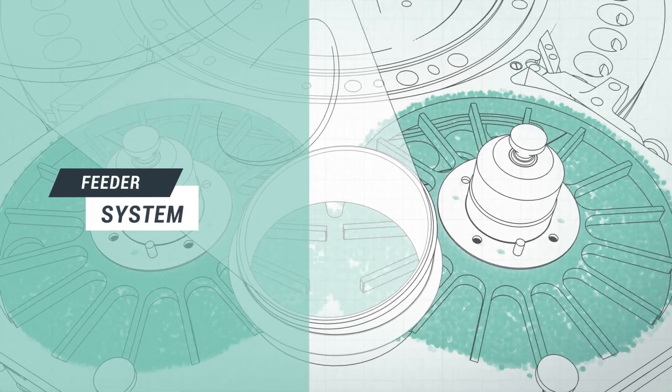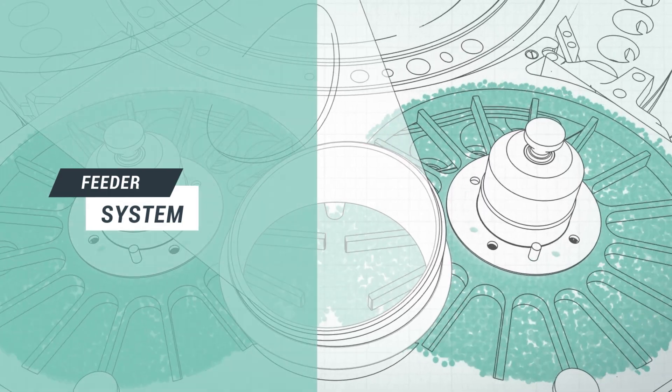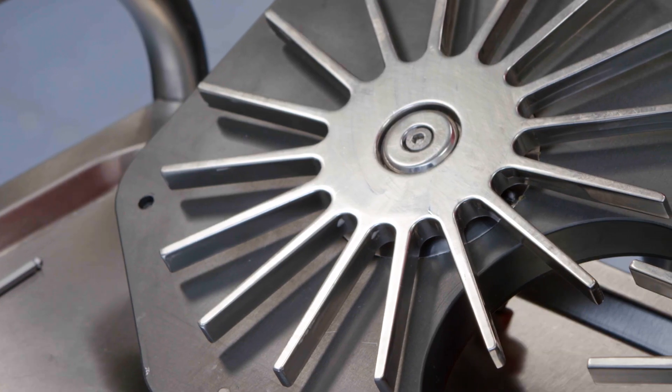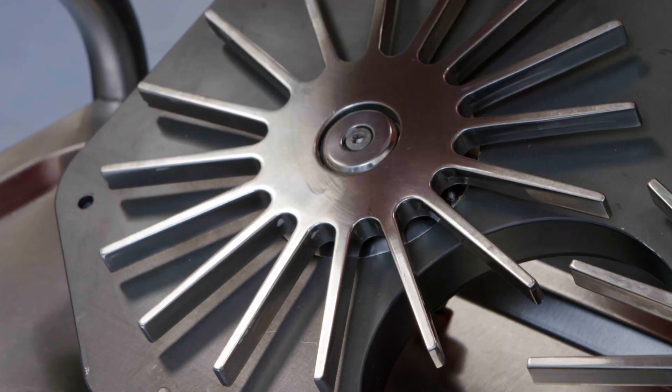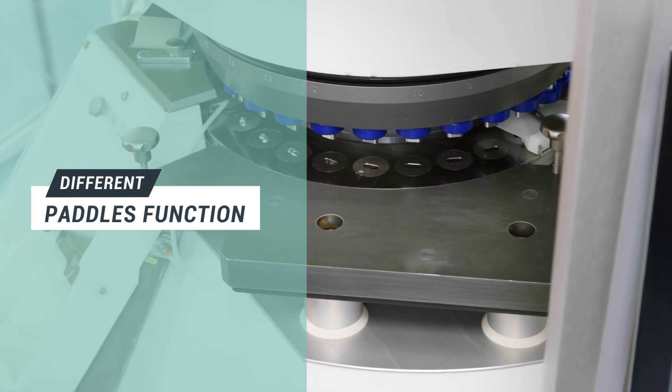Did you know that the paddles installed inside the die feeder perform different functions? The paddle on the left is responsible for die loading, whereas the paddle on the right generally completes die filling by scraping off any excess powder and putting it back inside the feeder.